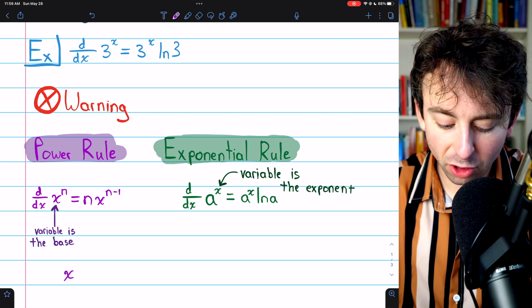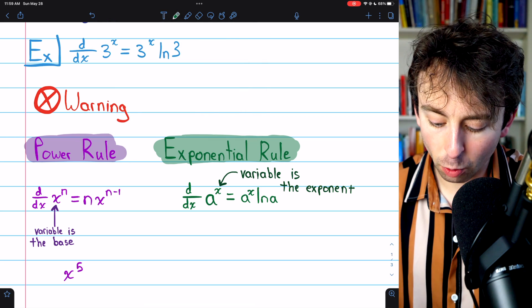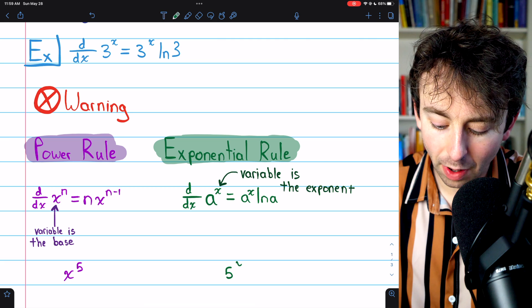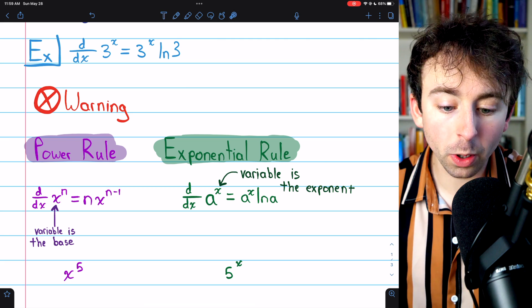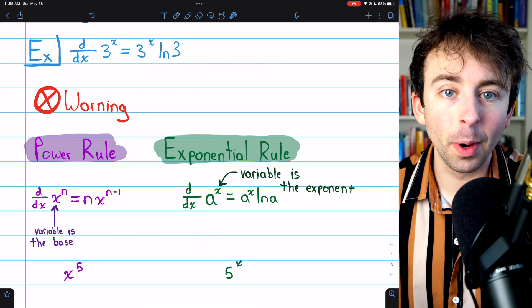We would apply the power rule in a situation like x to the 5, but we would need the exponential rule for a situation like 5 to the x. For the power rule, the variable is the base. For the exponential rule, the variable is the exponent.